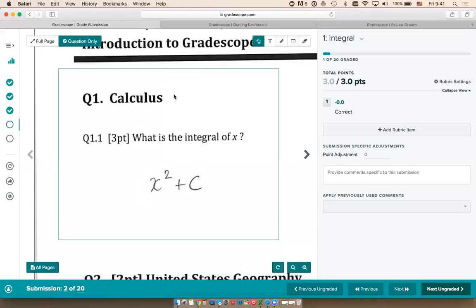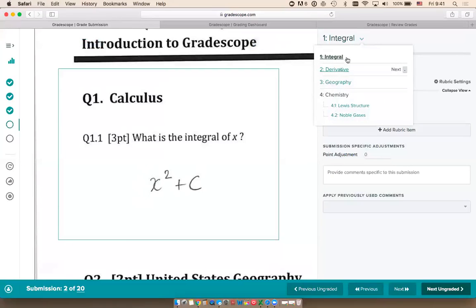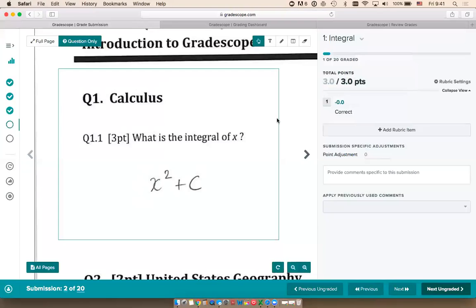The default way to grade on Gradescope is to grade one question at a time—grade all students for question one, then grade all students for question two. You do have access to every other question on the same student's exam, but most instructors find that grading one question at a time is faster, more consistent, and makes more sense because you can build the rubric as you grade and see new types of mistakes.